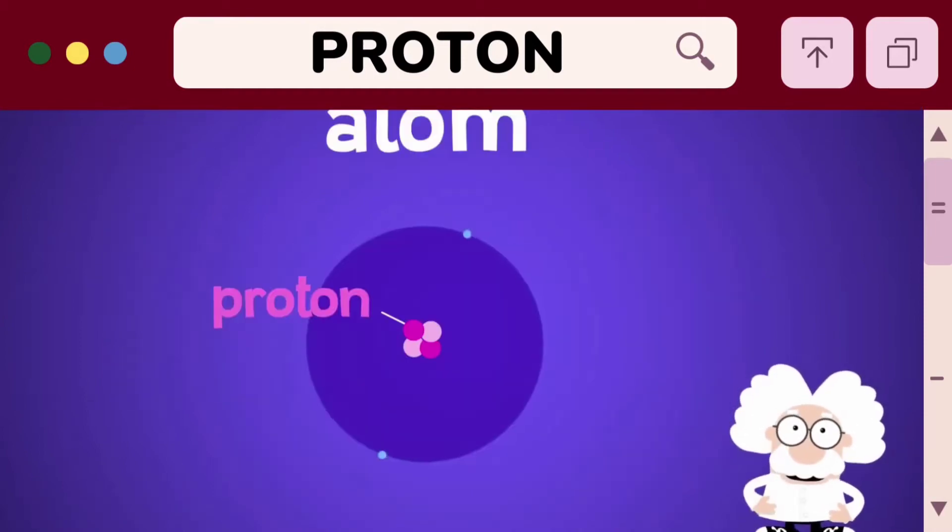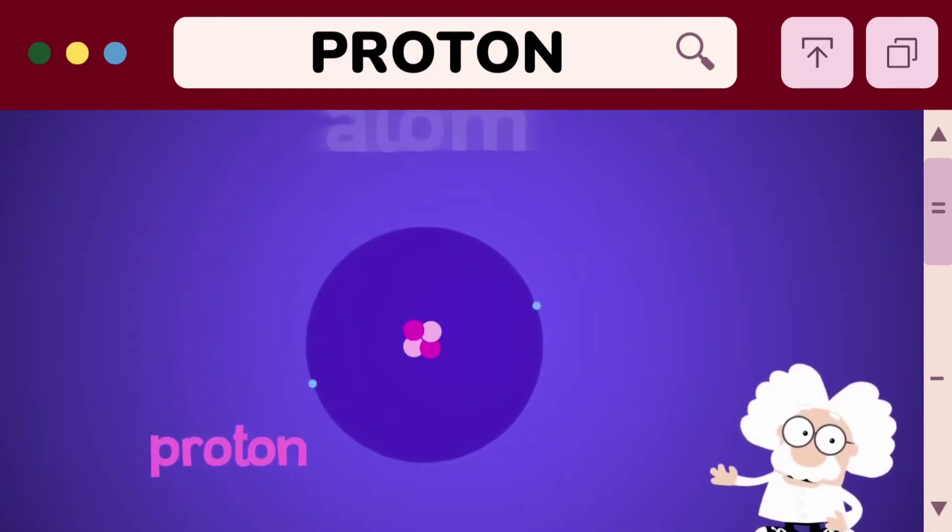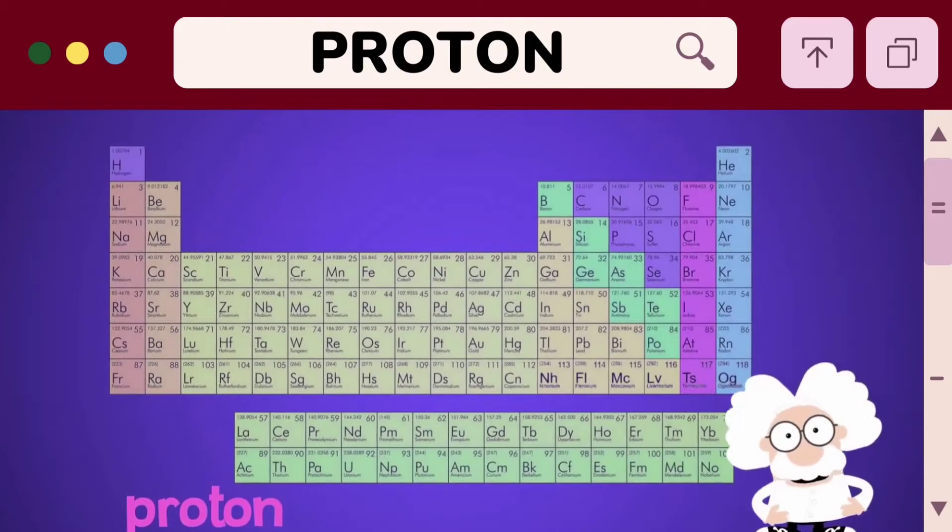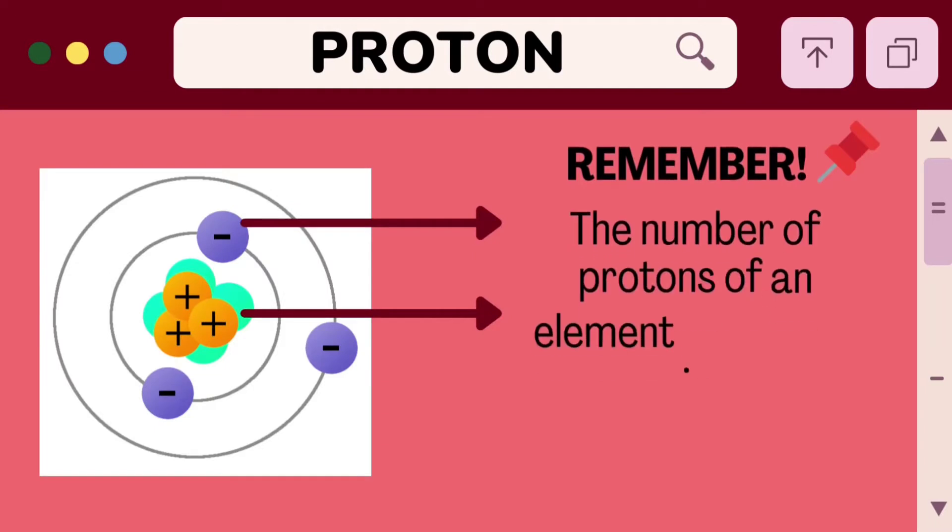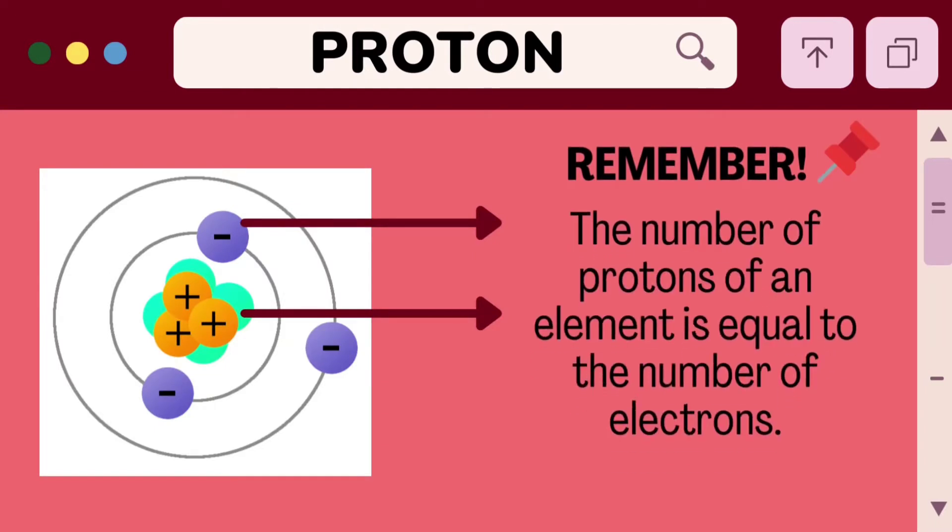Hydrogen, for example, has one proton. Thus, its atomic number is one. The number of protons of an element is equal to the number of electrons.